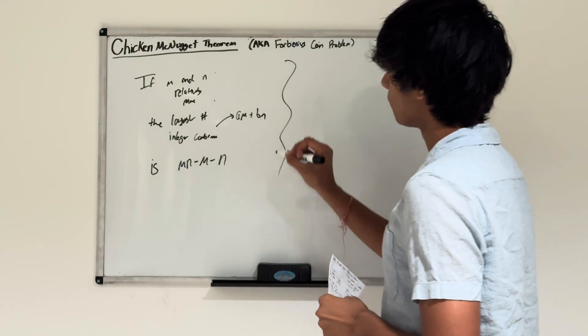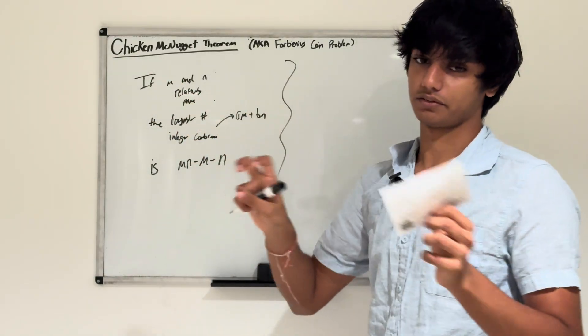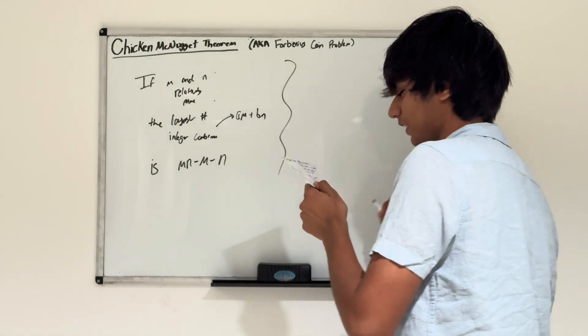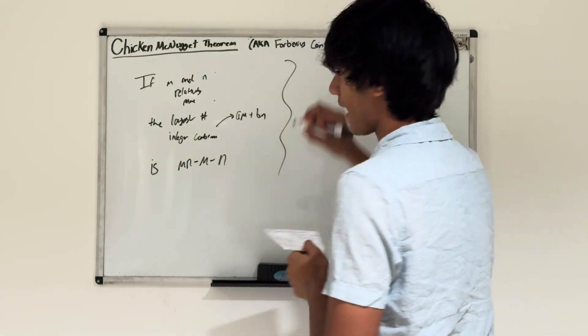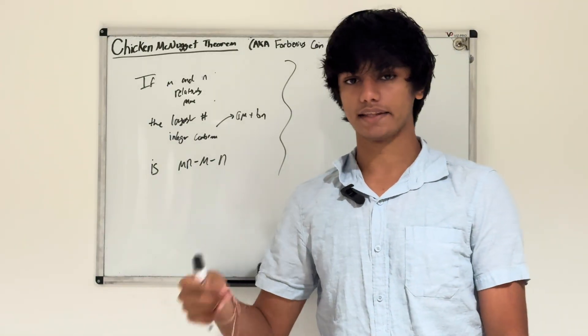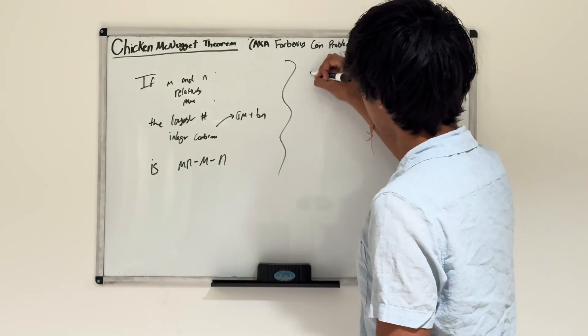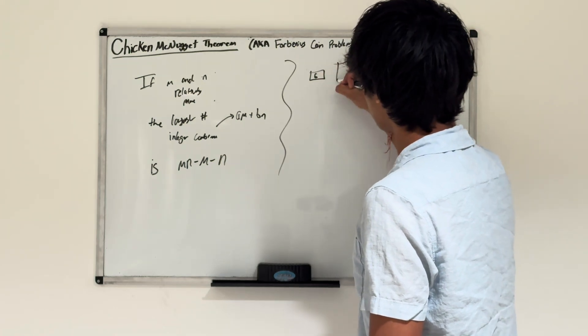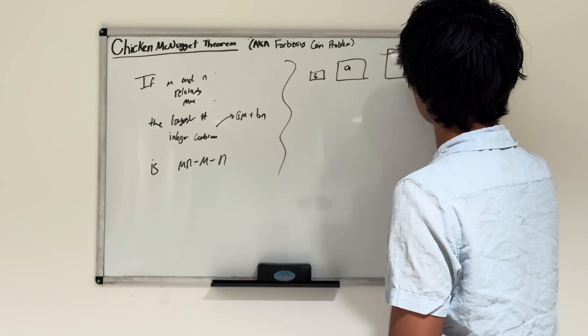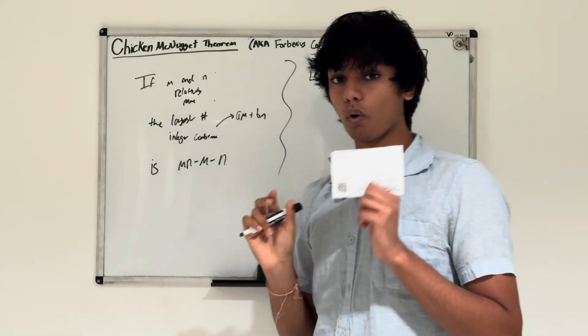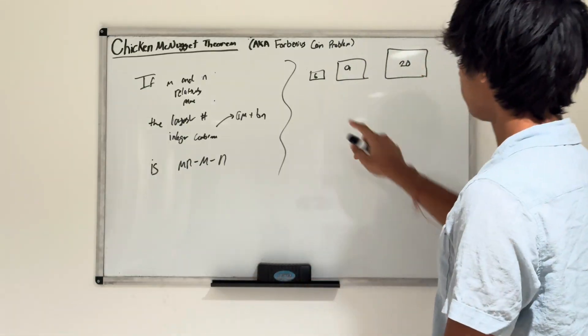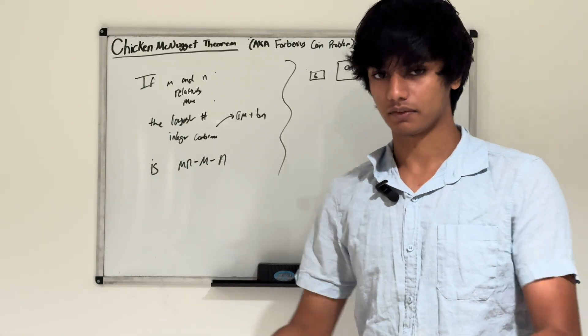The problem that started this theorem is the Chicken McNugget problem. Back in the 80s, chicken McNuggets were sold in boxes of 6, 9, and 20. The problem states: what is the greatest number of chicken McNuggets we can buy such that you can't use these boxes to make that order?